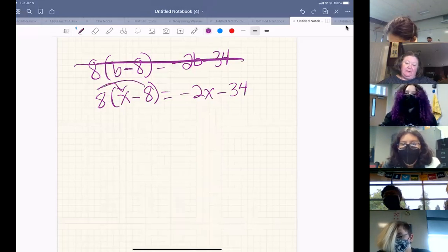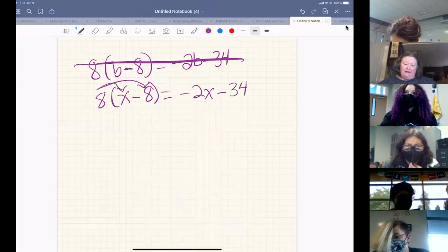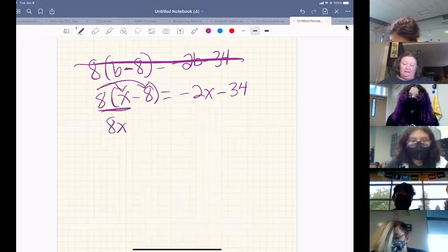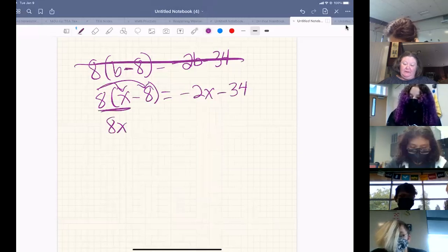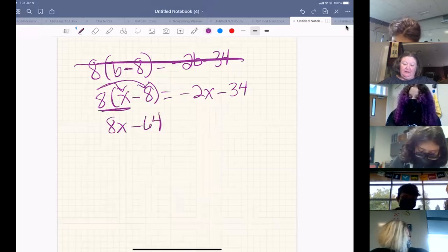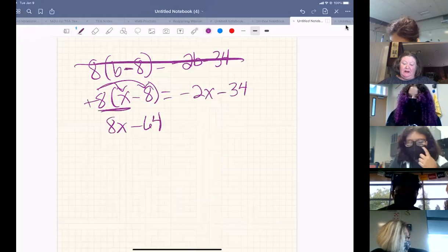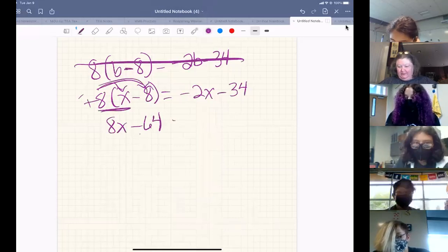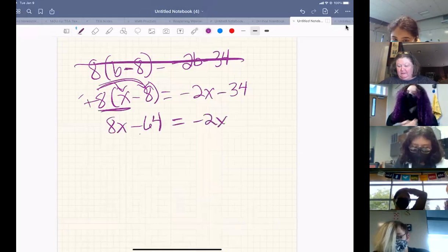This eight has to be shared to both the X and the minus eight. That's going to get us 8X for eight times X and negative 64. Positive eight times negative eight is going to get us negative 64, equals -2X - 34.